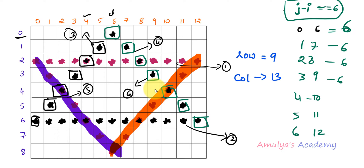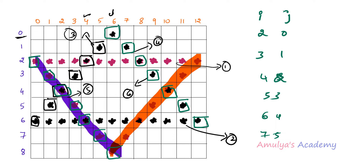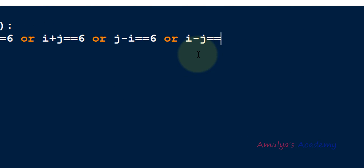For part 5, the positions are: row 2 column 0, row 3 column 1, row 4 column 2, row 5 column 3, row 6 column 4, row 7 column 5, row 8 column 6. If I do i minus j: 2-0=2, 3-1=2, 4-2=2, 5-3=2, 6-4=2, 7-5=2, 8-6=2 — always 2. So the condition is i - j == 2.